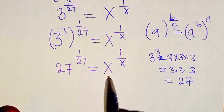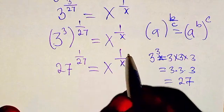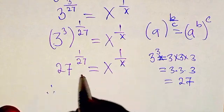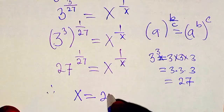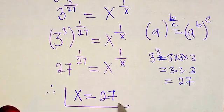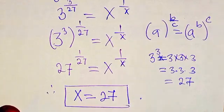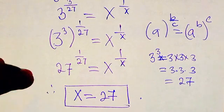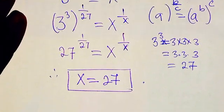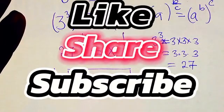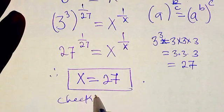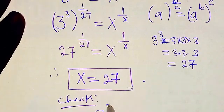Now we can see that 27 raised to its reciprocal equals x raised to its reciprocal. Comparing both sides, x to the power of 1 over x matches 27 to the power of 1 over 27, so x equals 27. If you find the class very interesting, do not hesitate to share it with your colleagues so they can benefit from it.